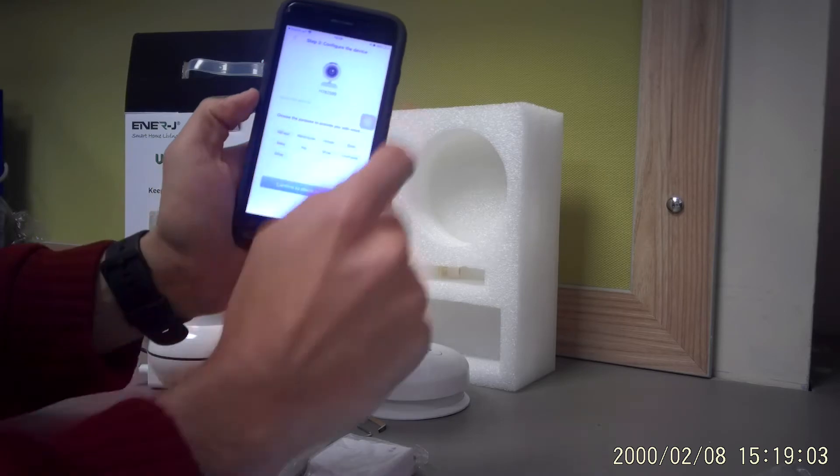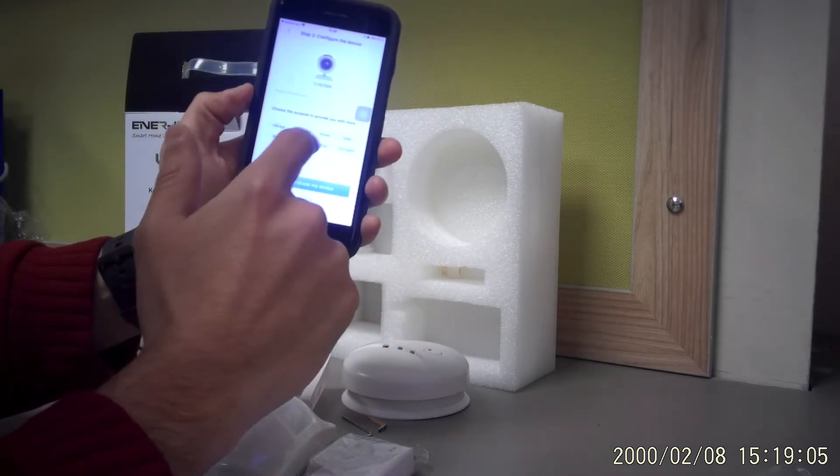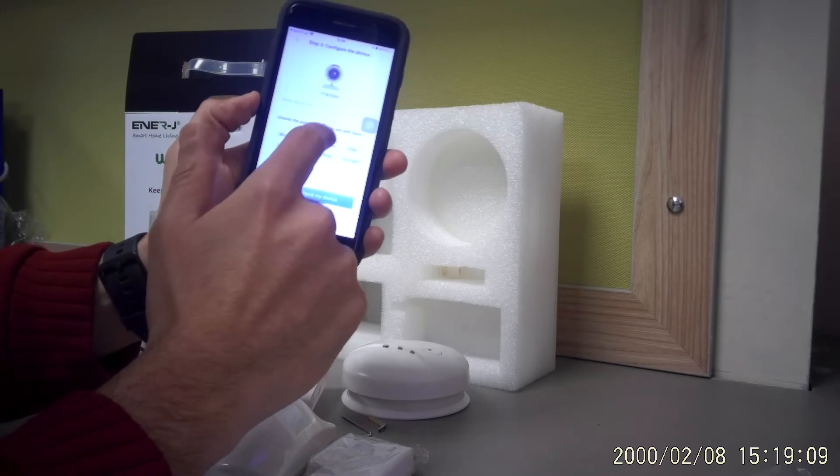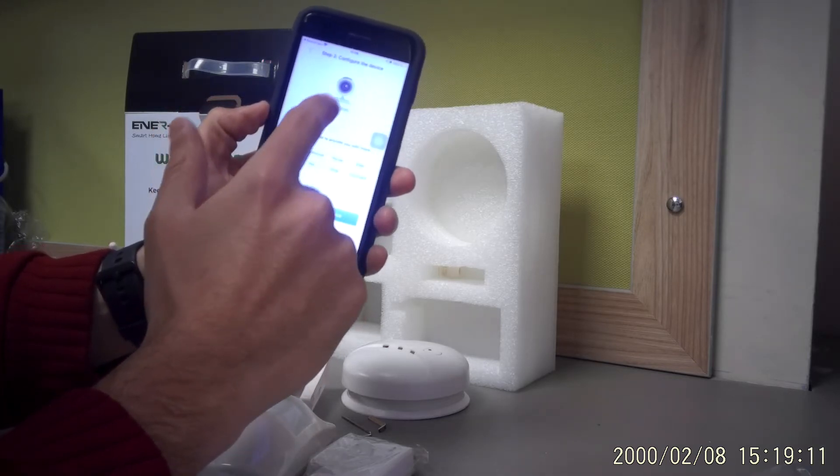As you can see, you can name the device. I'll put it like, let's say, house. I can select a predefined menu.